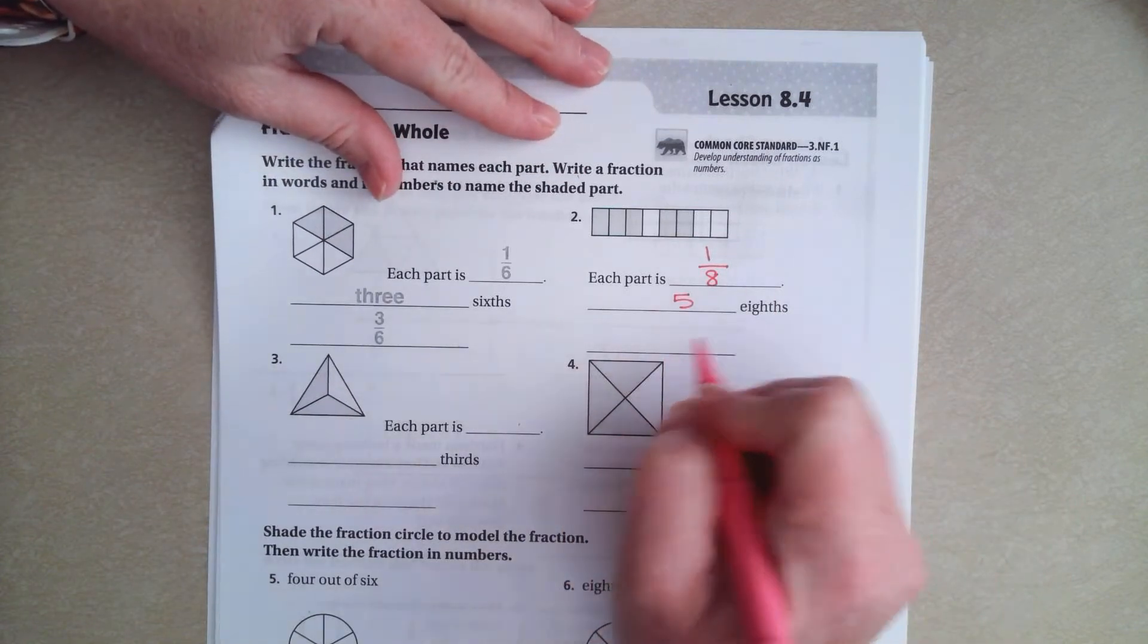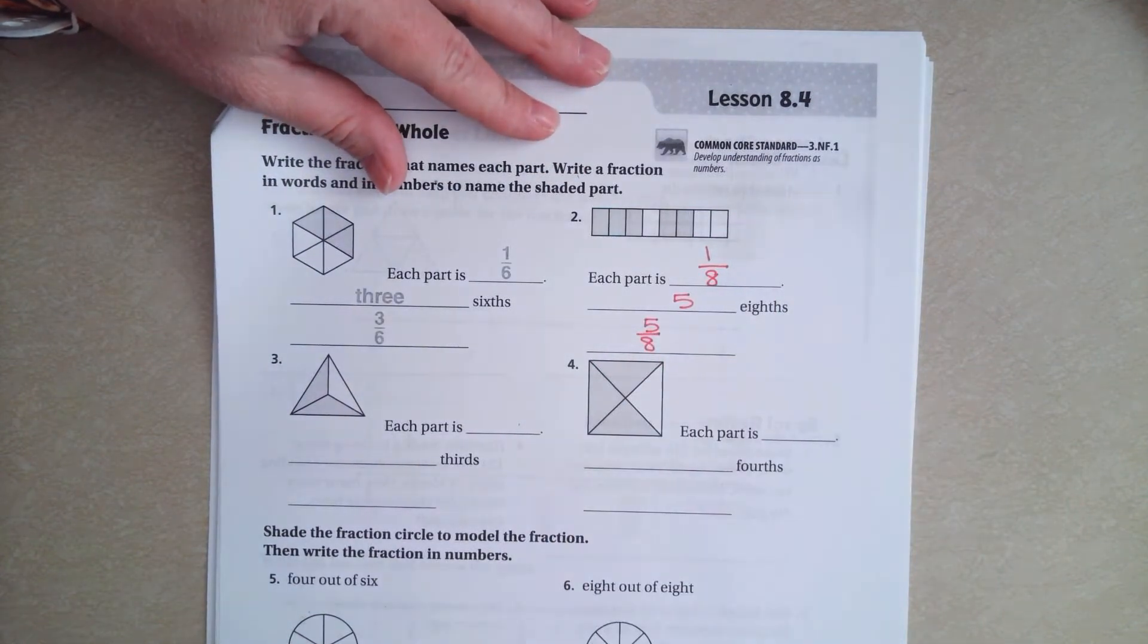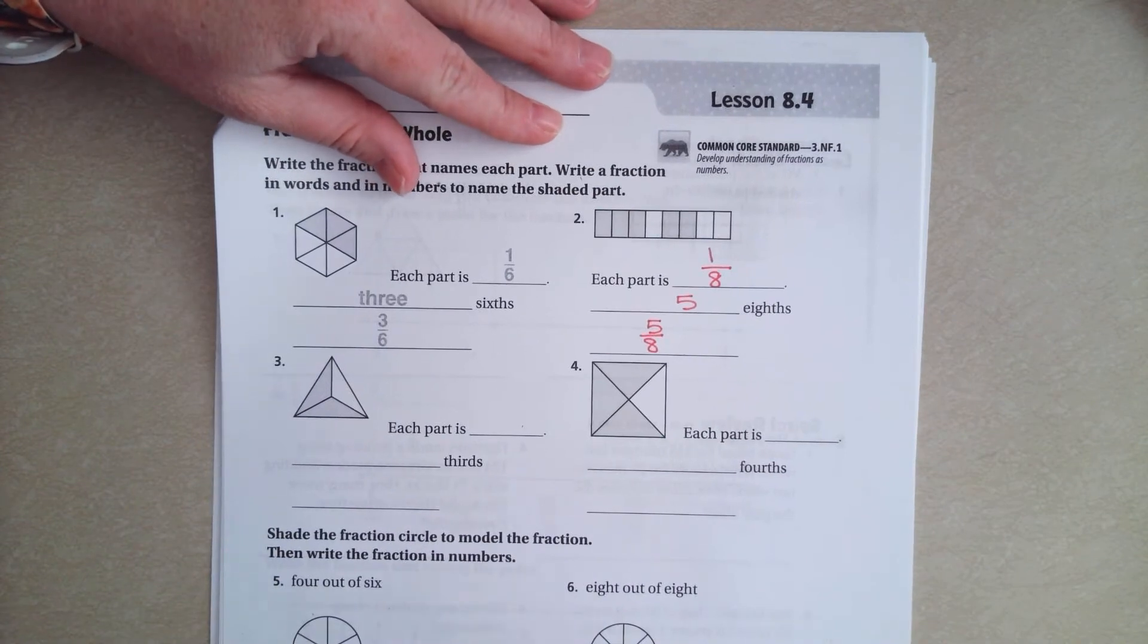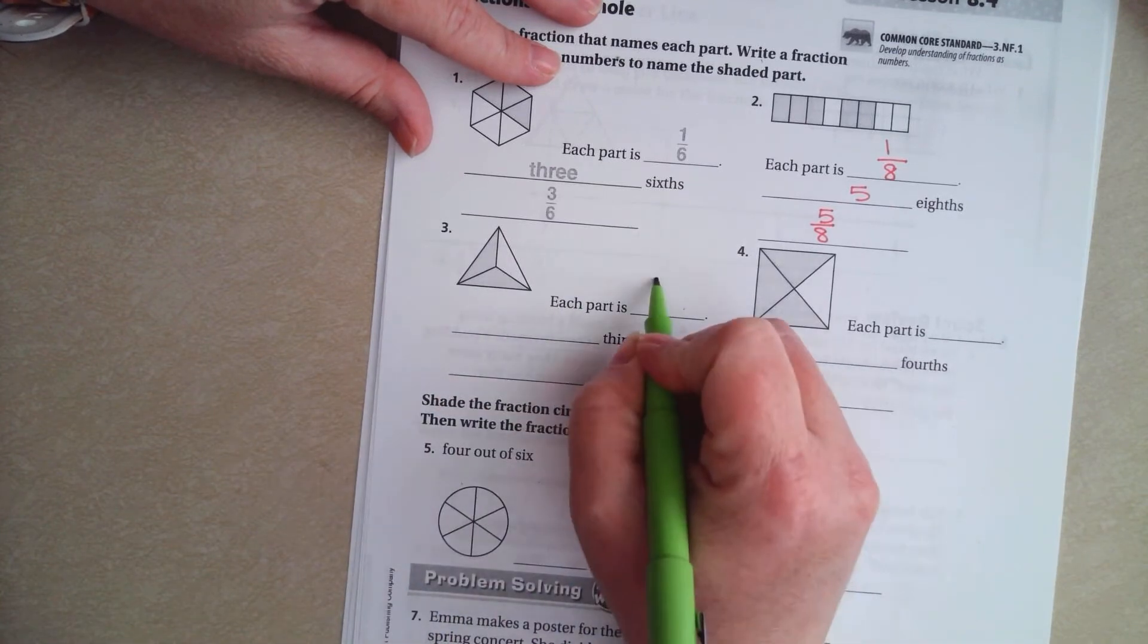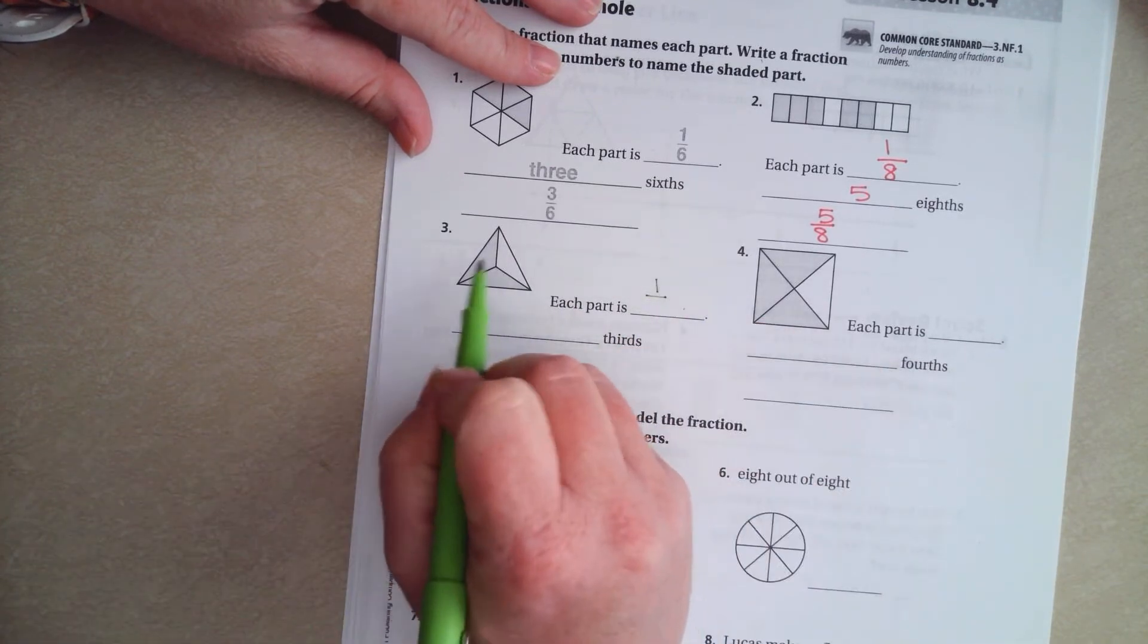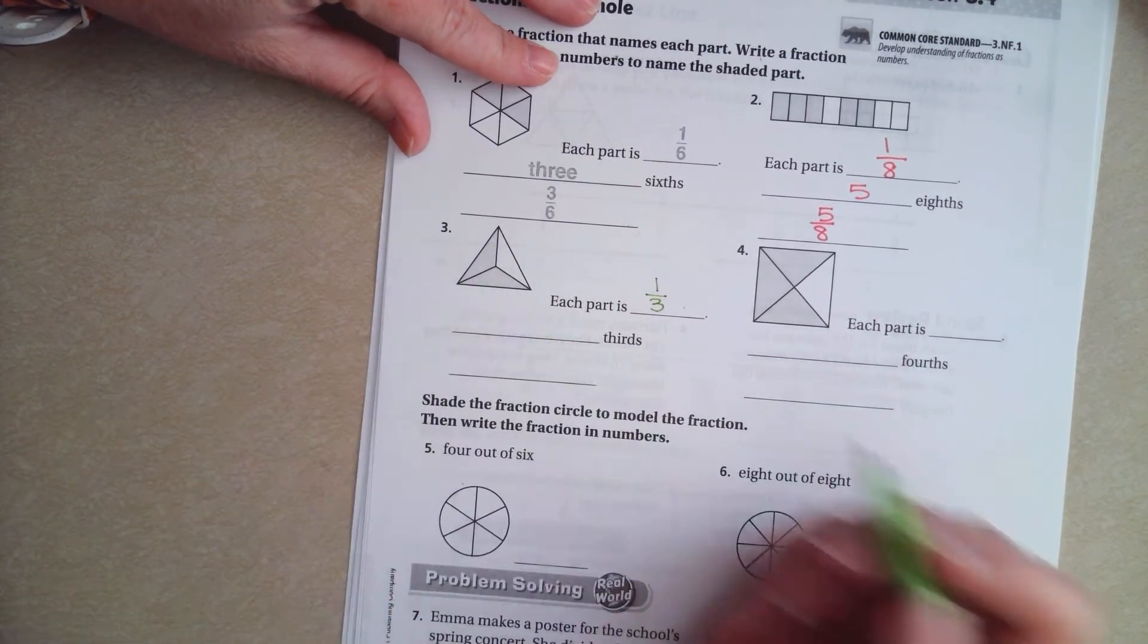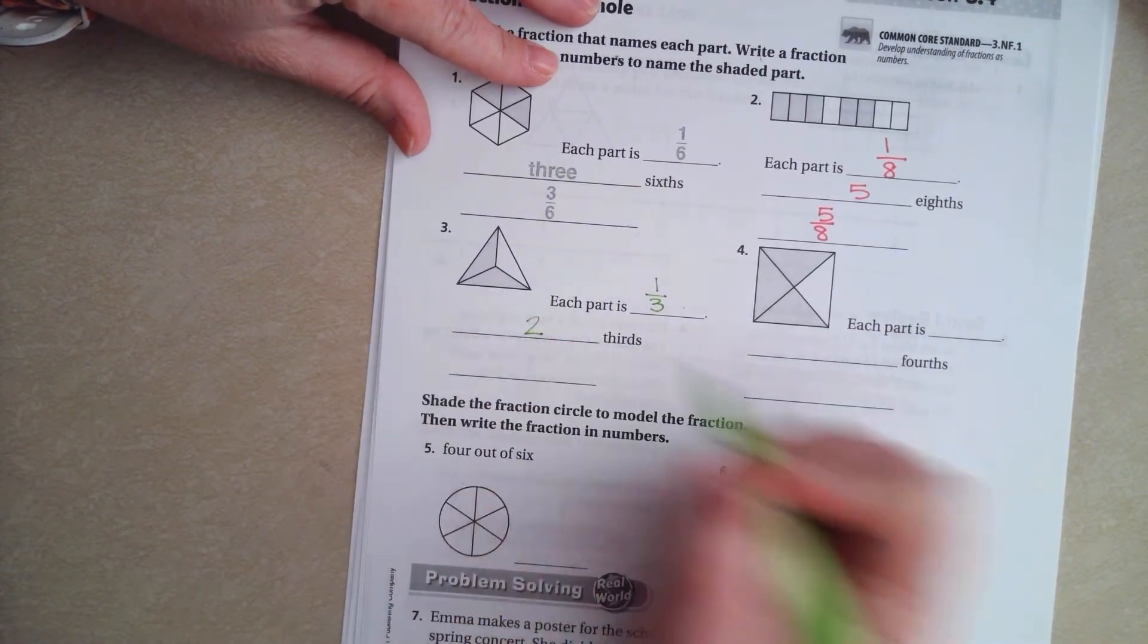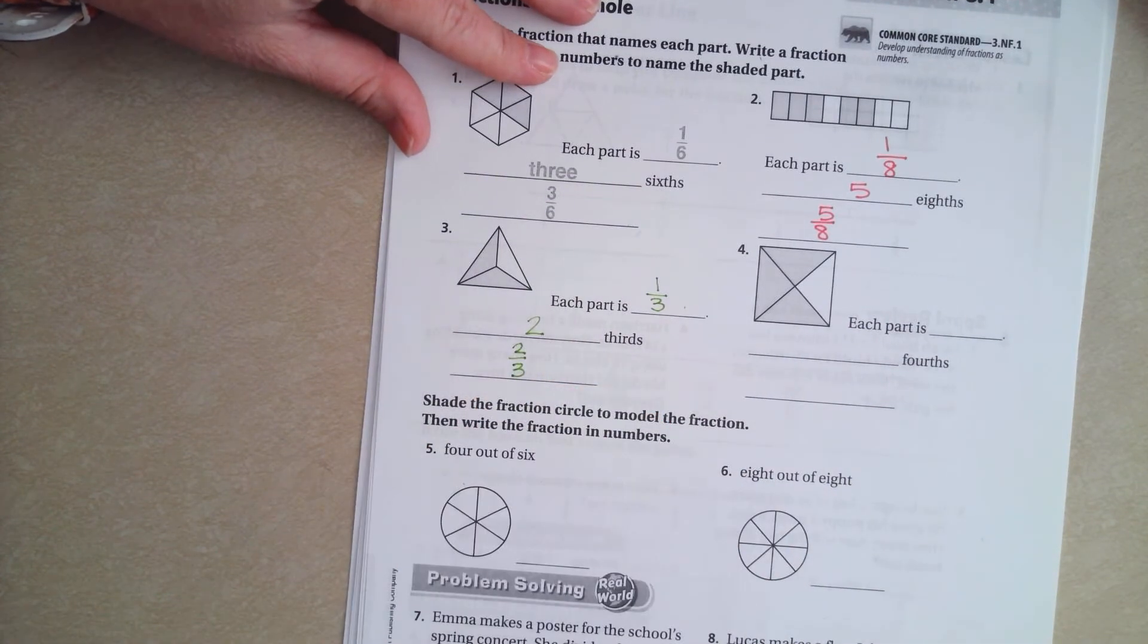Now, that 5 eighths, we would write it like this. All right, each part is 1 out of how many? 3. So, how many thirds are colored in? 2, and we would write that as 2 over 3.